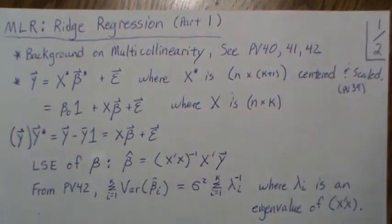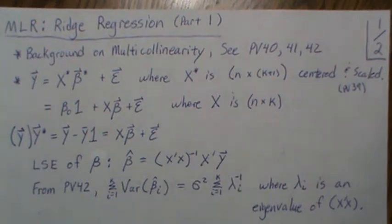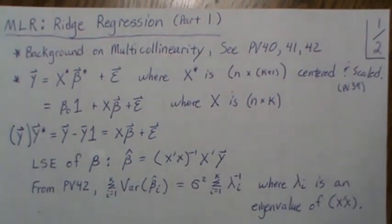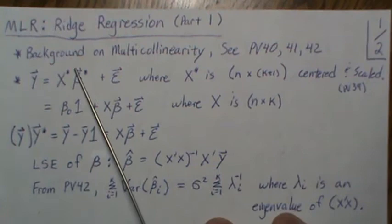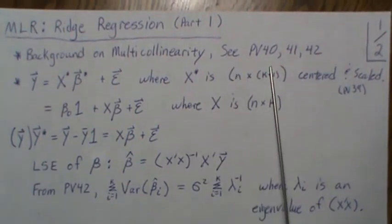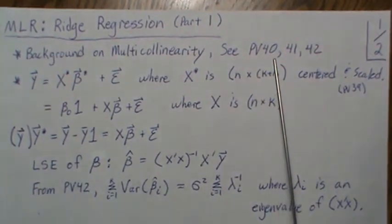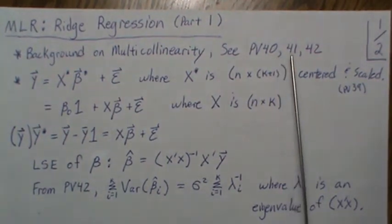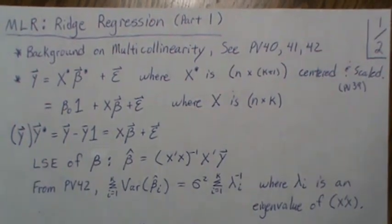In this video we're in the multiple linear regression setting and we're going to look at Ridge Regression. This is part one of a four-part series to keep each video shorter. I have some background videos on multicollinearity — previous videos 40, 41, and 42 in the General Linear Models Regression playlist.